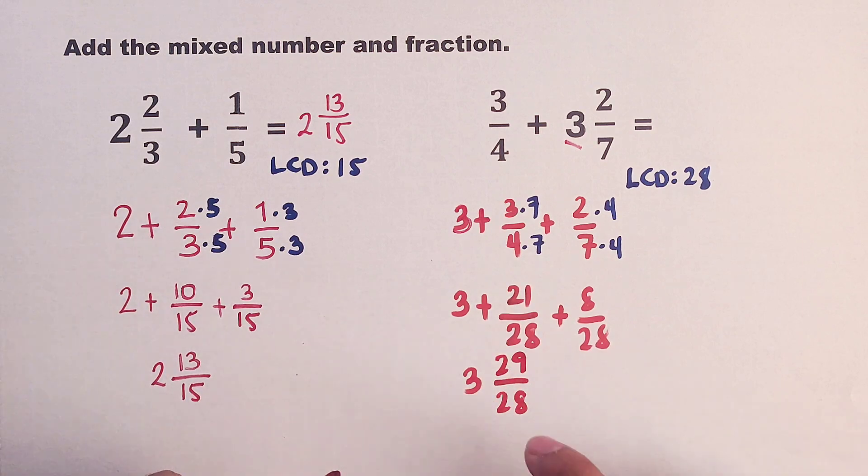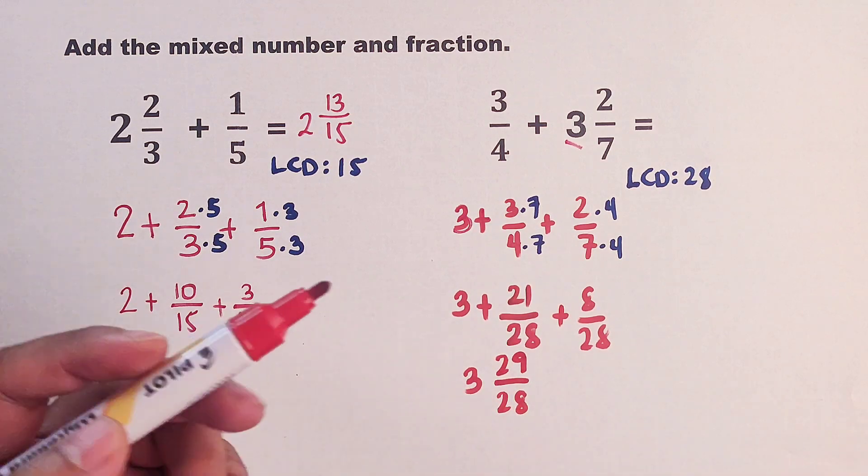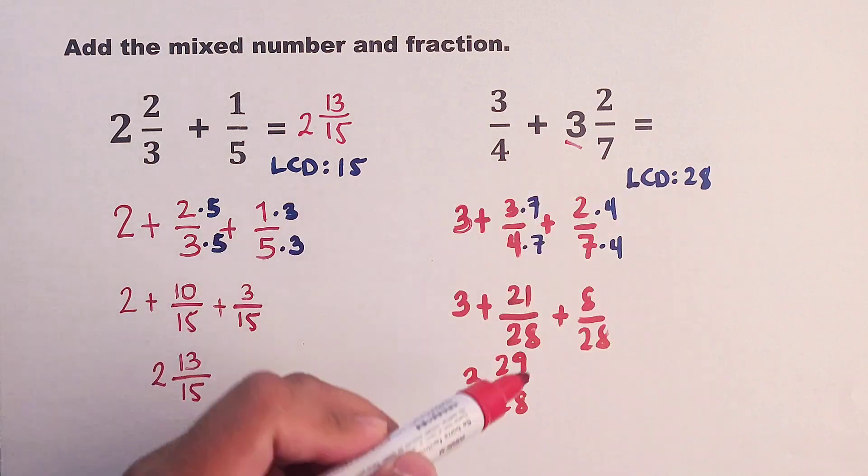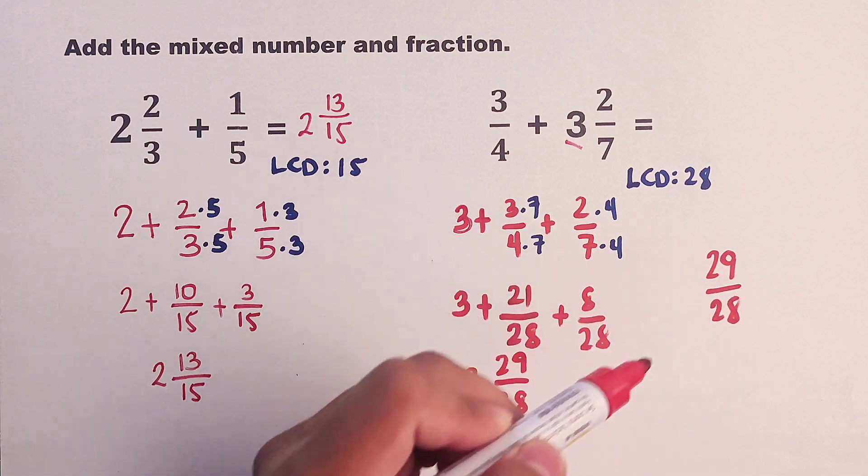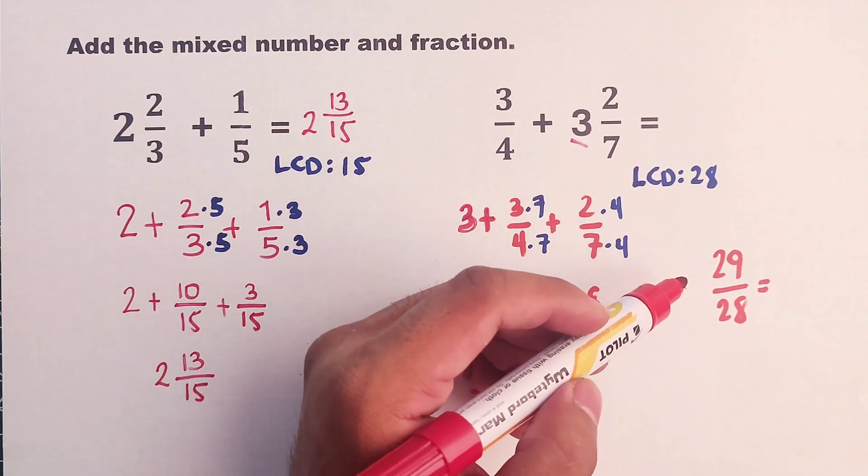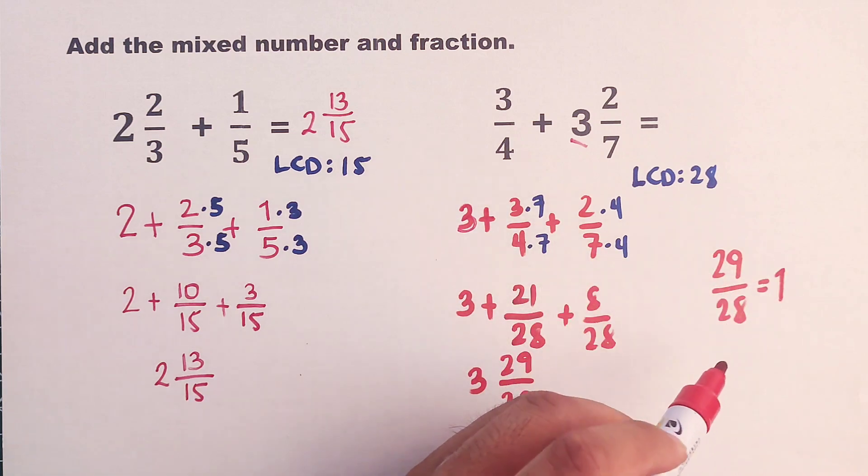The problem here is that this fraction is an improper fraction. Meaning, we need to convert this 29 over 28 into a mixed number. As you can see, there's only one 28 in 29. So meaning, the whole number must be 1.